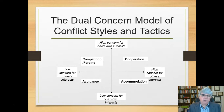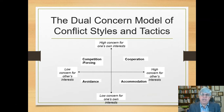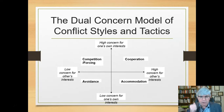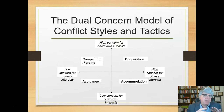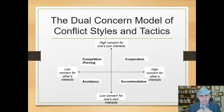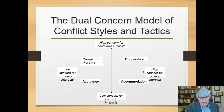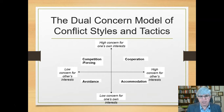The quadrant above that: if I'm really concerned about my own interests but I don't really care what the other person wants, I'm going to be using a style known as competition or forcing. I want what I want, I'm going to get it, and I don't care what you want. That's typically what we think of when we think of conflict — somebody fighting for their own interests without being concerned about the other person's interests. But that's only one way of dealing with a conflict.